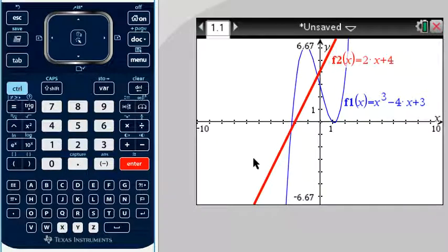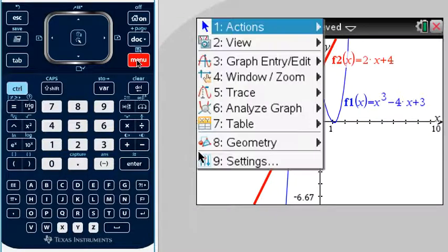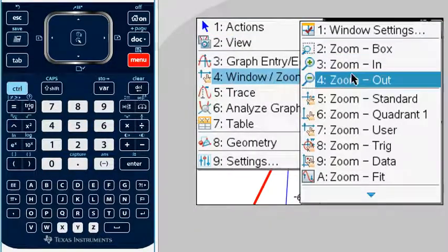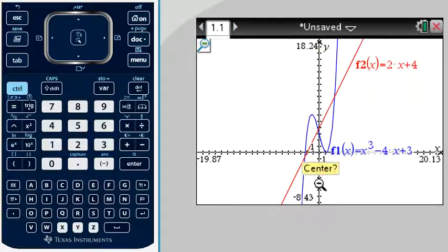And now we're going to find the points of intersection. But the thing is, I can't really see my points of intersection. So I might zoom out a little bit. Zoom out. And now I can see all three.